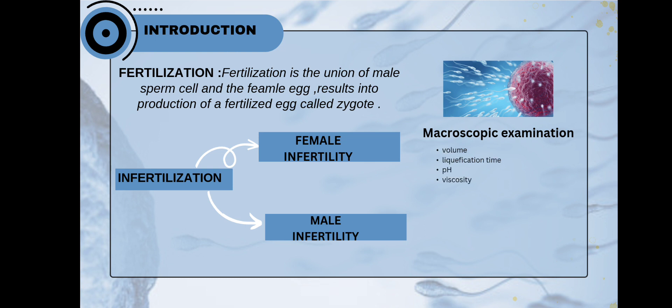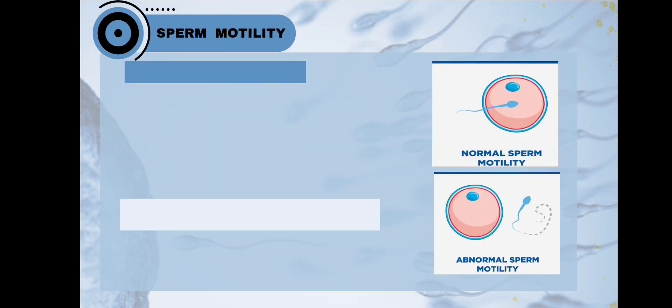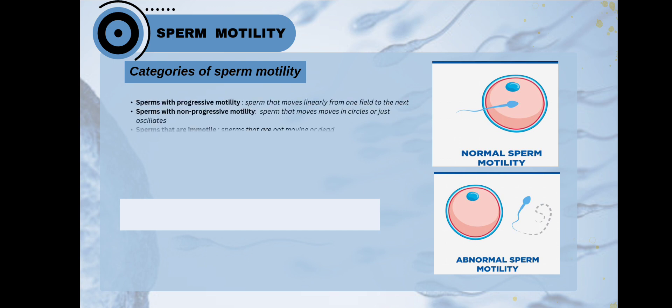In order to determine the male infertility, we do two examinations: first the macroscopic examination and the second microscopic examination. In microscopic examination we determine the sperm cell motility that is divided into different categories.